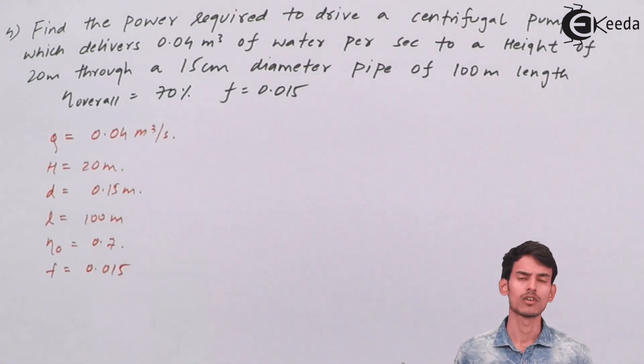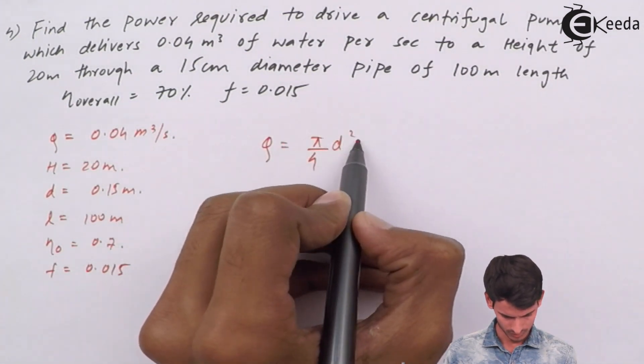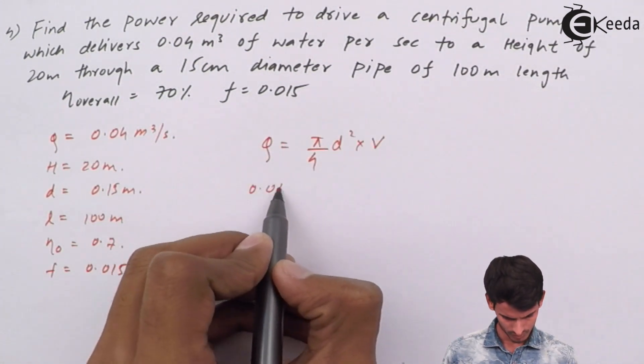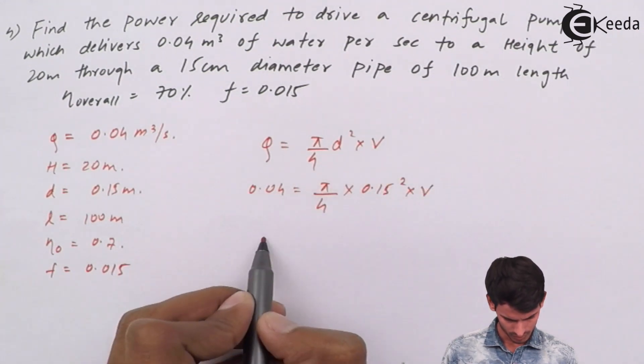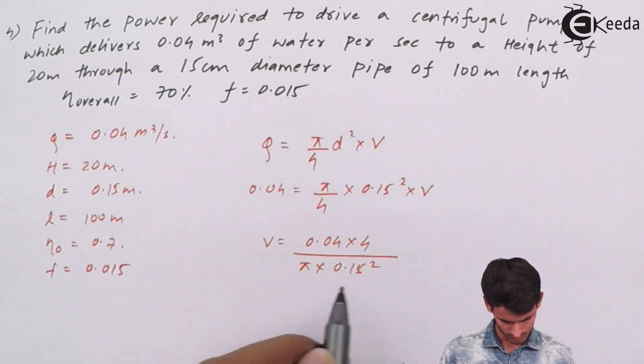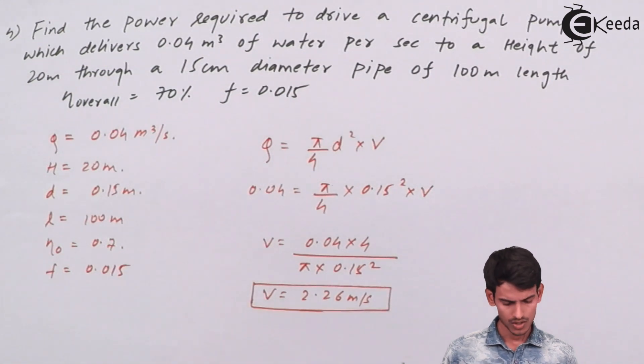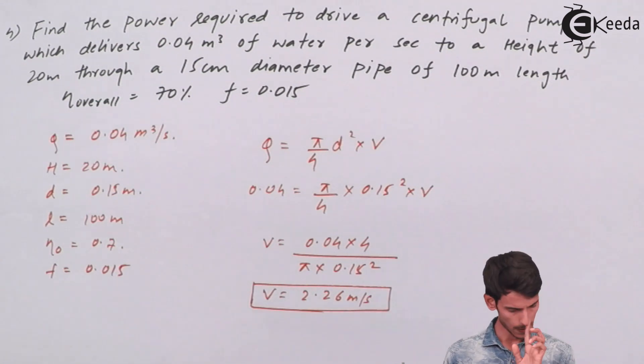The velocity of flow through the pipe comes out to 2.26 m/s. Now we've got the velocity. The reason for finding velocity is because we need to calculate the head loss as well. For head loss, you need velocity - head loss due to friction as we've seen in Chapter 3, Losses in Pipes.